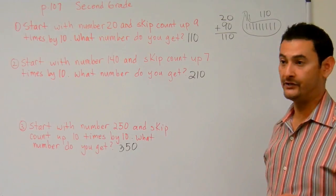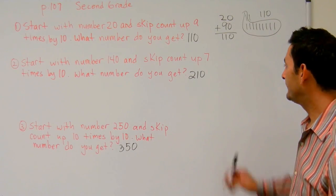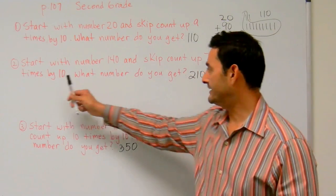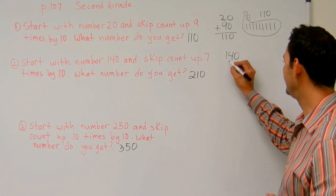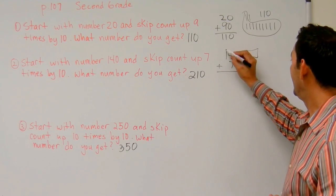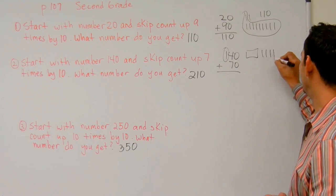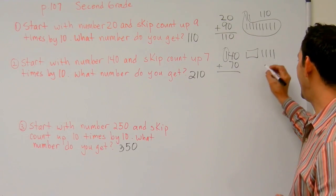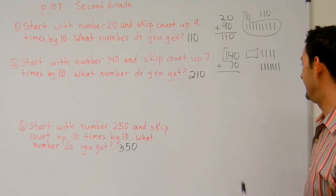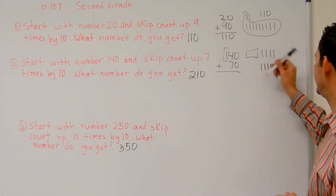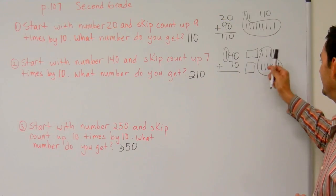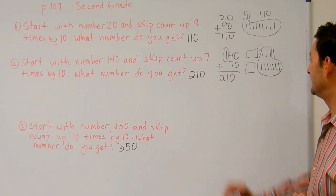Now let's take a look at number two. That says, start with number 140. We're going to skip count seven times by ten. What's seven times ten? That's 70. Here we have a hundred bundle. Here we have four bundles of ten. Here we have seven bundles of ten. So here I've got seven, eight, nine, ten. This right here becomes another bundle of ten. That's 200, 210. That's the answer there.